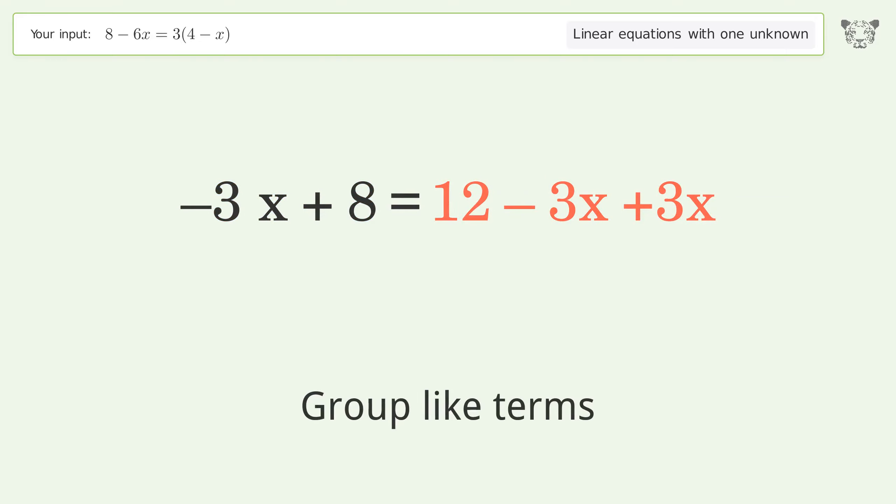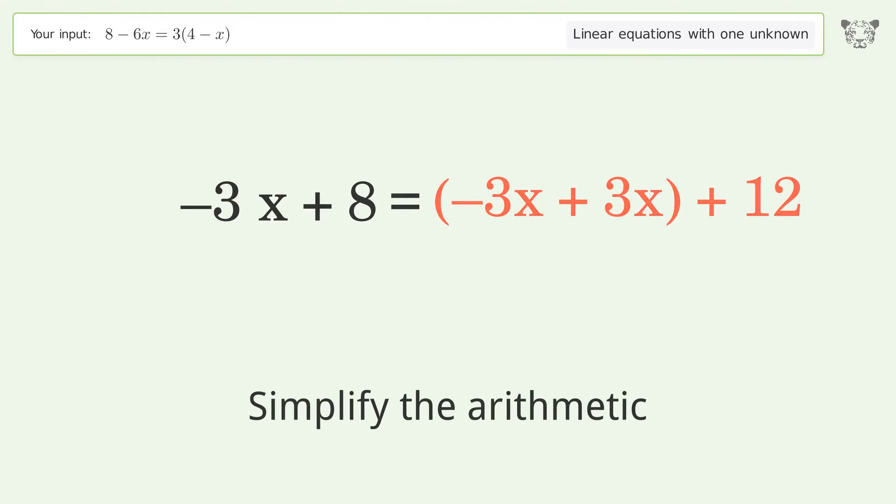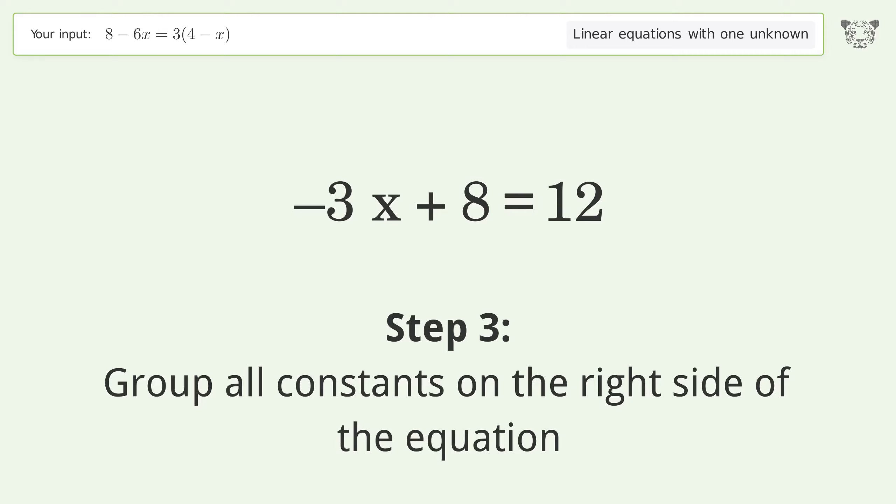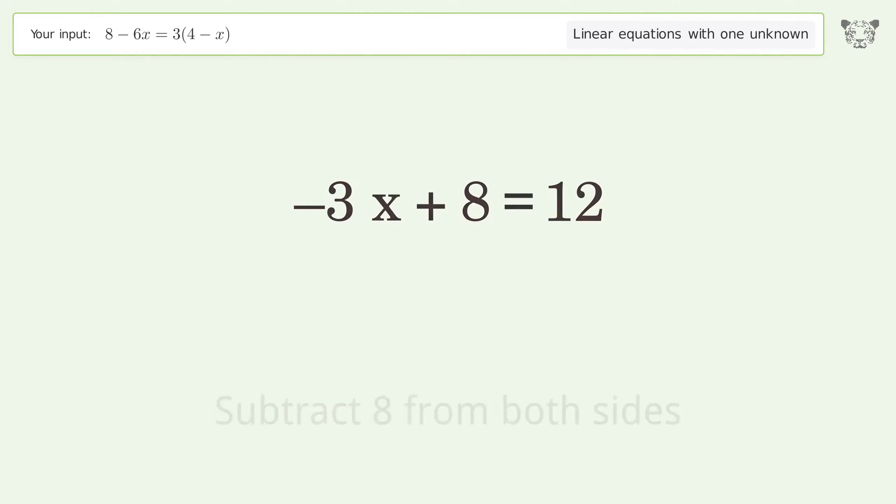Group like terms. Simplify the arithmetic. Group all constants on the right side of the equation. Subtract 8 from both sides. Simplify the arithmetic.